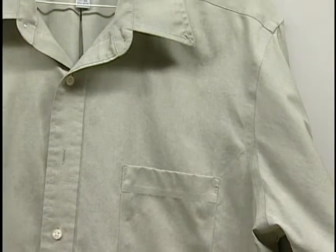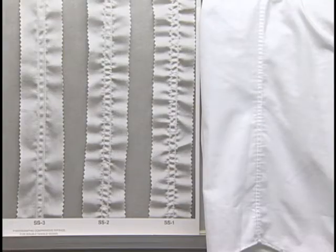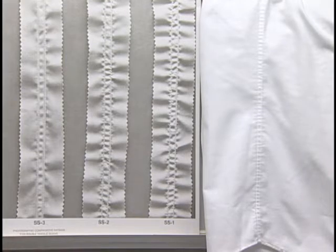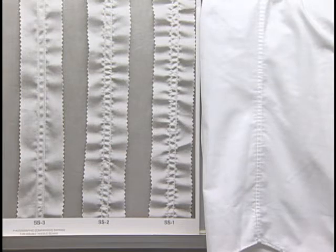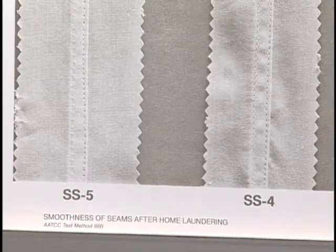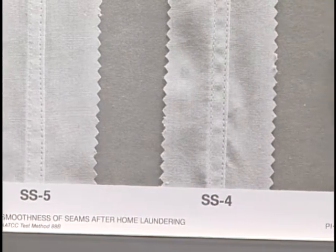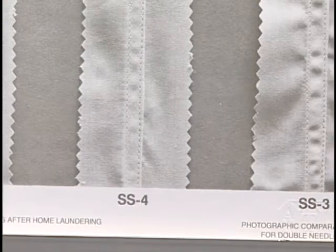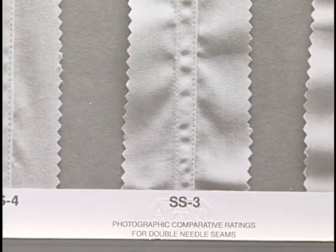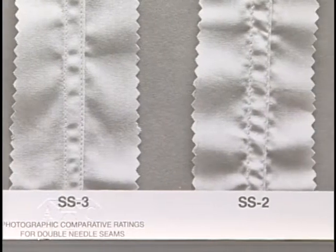Depending on the styling of the shirt, there may be other seams. The garment is laundered as prescribed by the test method and hung for conditioning. For evaluation, the test specimen is mounted on the viewing board with the seam to be evaluated in the vertical direction. Place the appropriate single or double needle standard seam smoothness replicas beside the specimen to facilitate comparative rating. Assign the numerical grade of the photographic standard which most nearly matches the appearance of the seam. A seam smoothness grade of 5 is the best level of seam appearance, while a grade of 1 represents a very poor level of seam appearance.